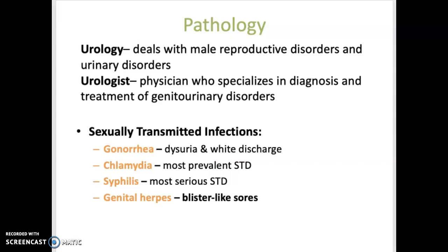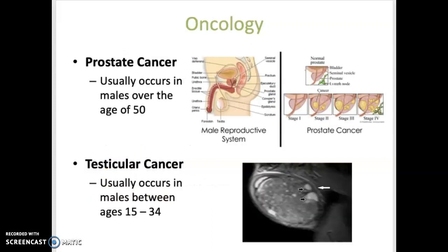Syphilis is the most serious one. If untreated, it can affect multiple body systems, including the nervous system. And genital herpes causes red blister-like sores in the genital region, and this is very infectious — it's easily spread.